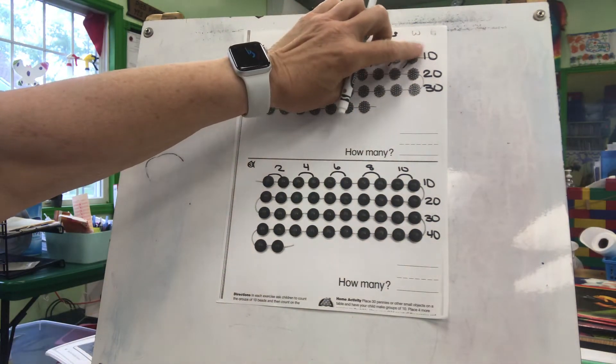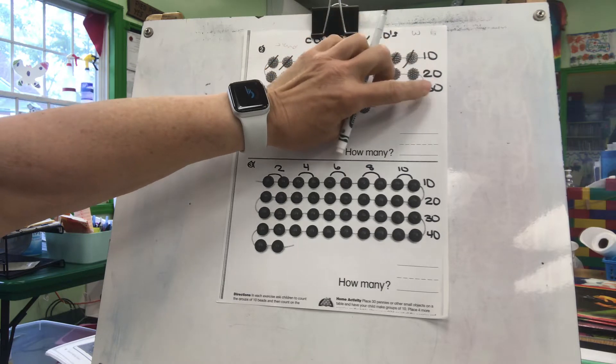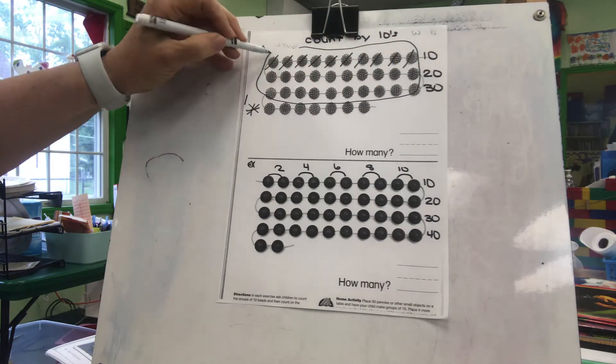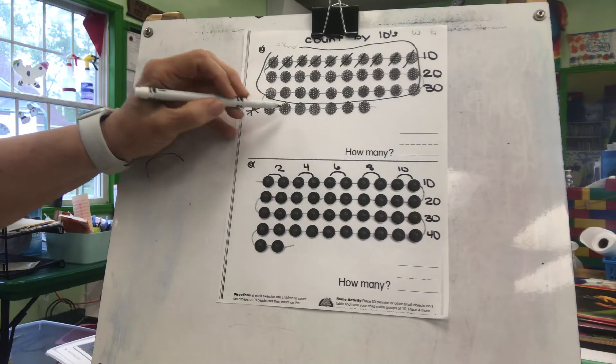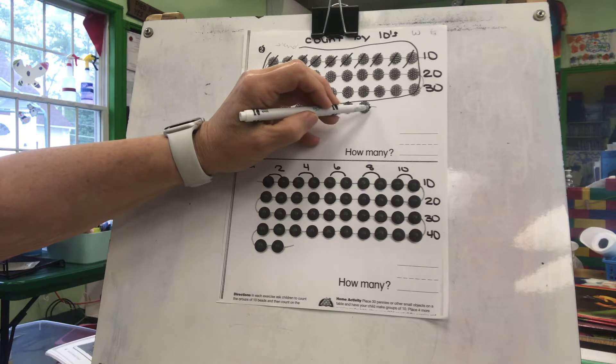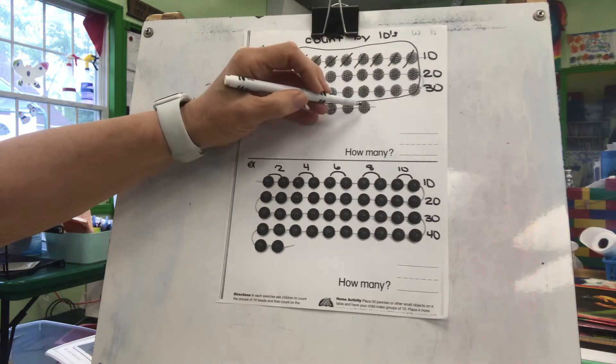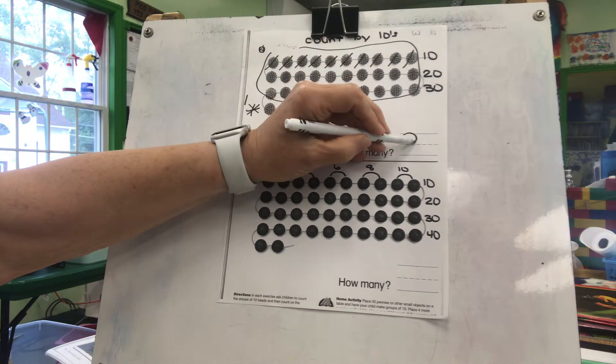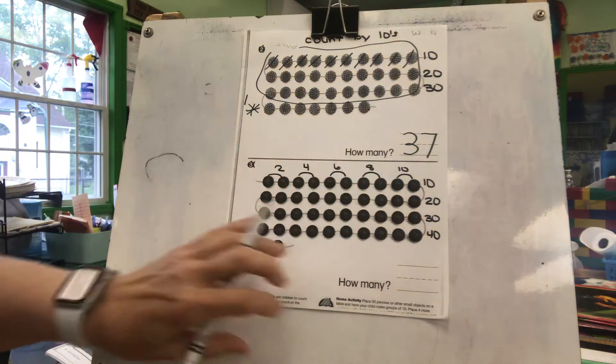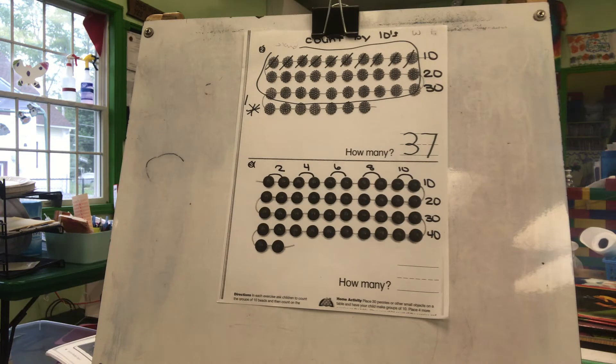But first we'll count by tens. Ten, twenty, thirty. So we know there's thirty beads here, and then we count by ones. One, two, three, four, five, six, seven - thirty plus seven, thirty-seven beads. All right, I want you to count these yourself and come back to me when you're done. Go!